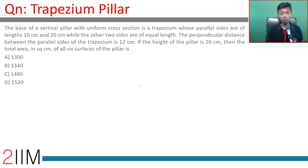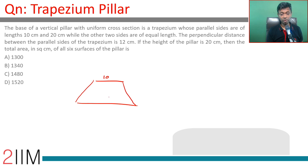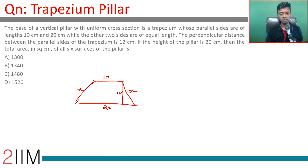The base of a vertical pillar with uniform cross-section is a trapezium whose parallel sides are of length 10 centimeters and 20 centimeters. The other two sides are of equal length — let's call them x and x. The perpendicular distance between the parallel sides is 12. Since the two non-parallel sides are equal, it's an isosceles trapezium. This gives us two right triangles with height 12 and base 5 on each side.